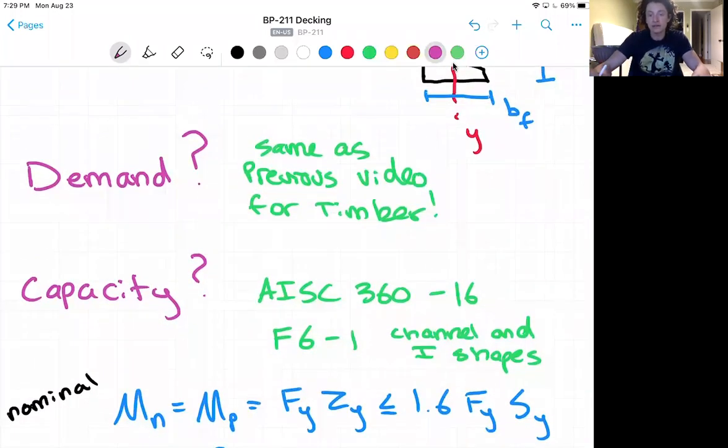Now the equation in F6-1 to calculate nominal moment is shown below. Fy*Zy is less than or equal to 1.6*Fy*Sy and we'll go into what that less than or equal to means as we go through the example below.